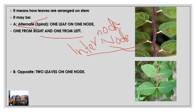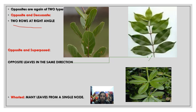In the next case, two leaves are present on one node. This is the node — there is a leaf here, and a leaf here, and a leaf here, and a leaf here. When this condition occurs it is called opposite phyllotaxy. Opposite leaves are divided into two types. In the first type — opposite and superposed — the leaves at each node arise in the same direction.